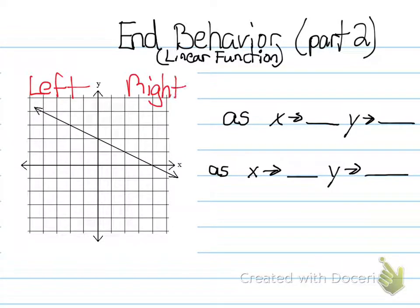Alright, looking at the left side of the graph, if you look at the x-axis on the left side, these numbers right here are always going to be negative numbers. They're going to keep going all the way to negative infinity.